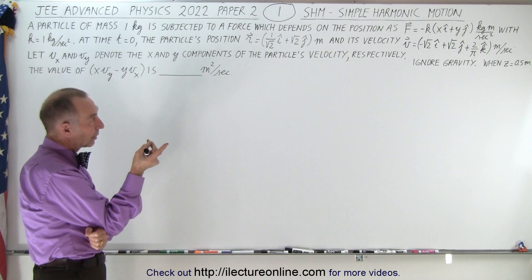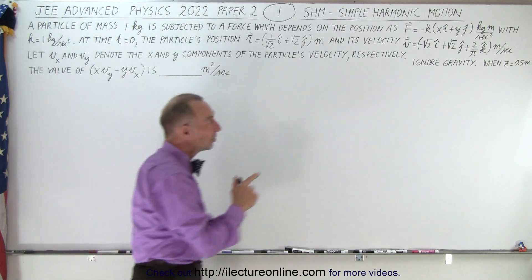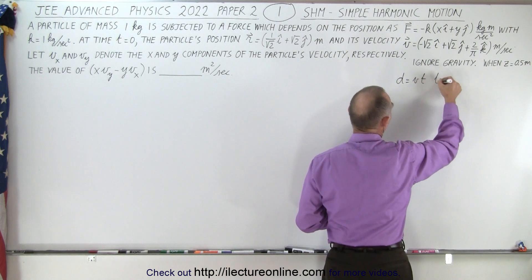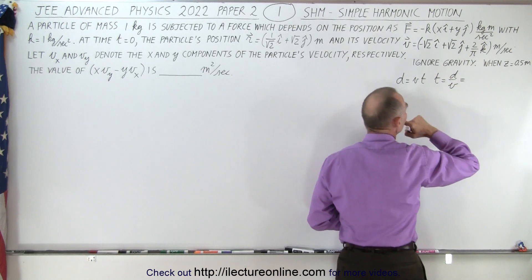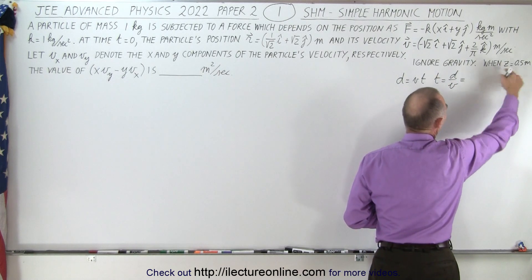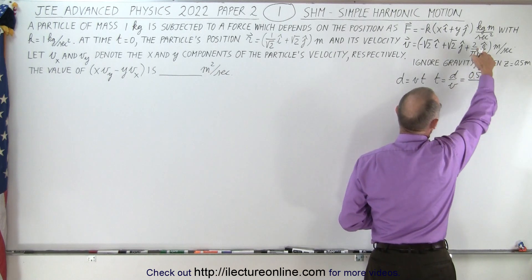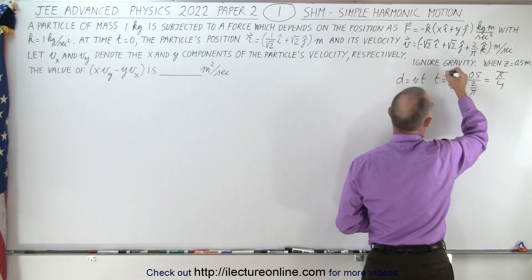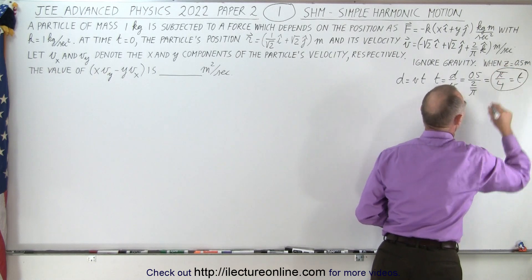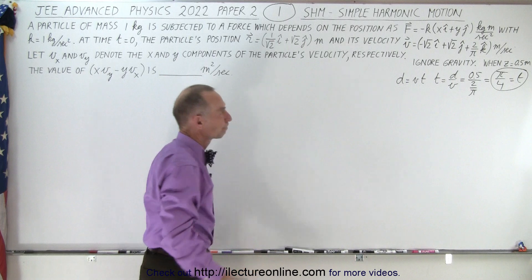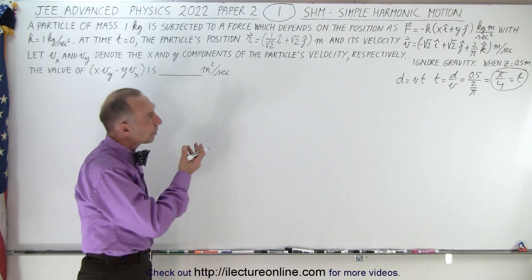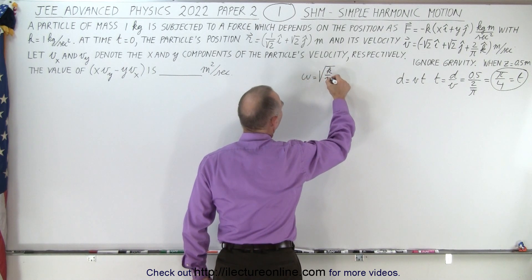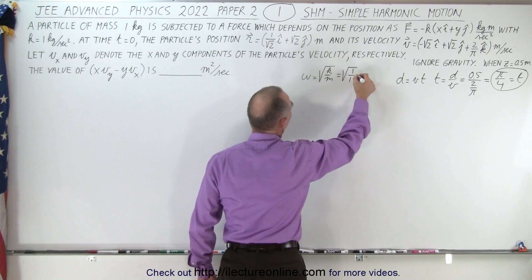First of all, we're going to need the time when z equals 0.5 meters. We know that distance equals velocity times time, which means time equals distance divided by velocity. We're given 0.5 meters for distance and the velocity is 2 over pi, so this simplifies to pi divided by 4. So when time is pi over 4, that's the moment when we want to calculate this. We're also dealing with simple harmonic motion, which means omega equals the square root of k over m. In this case k is 1, m is 1, so omega is simply equal to 1.